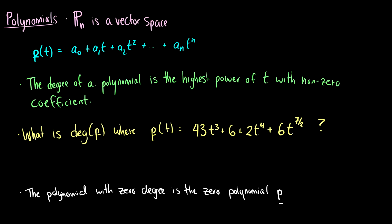Okay, here's one that might surprise you. Polynomials are vector space. So for instance, we can write a polynomial as a_0 plus a_1 times t plus a_2 times t squared. And this just goes up to some t to the n.